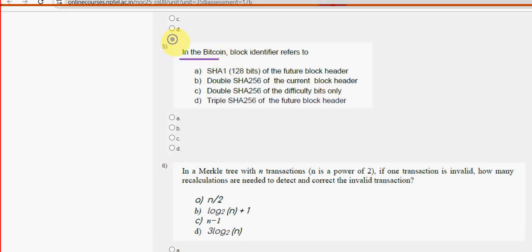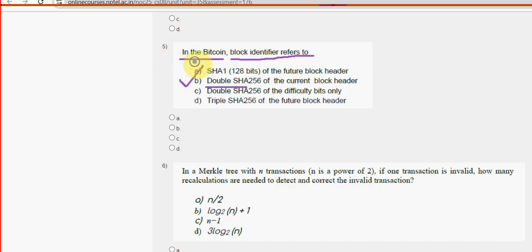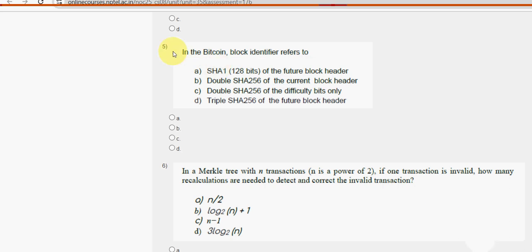Fifth question: in Bitcoin, the block identifier refers to what? The probable solution is option B — double SHA-256 of the current block header. Mark option B as the probable solution for the fifth question.